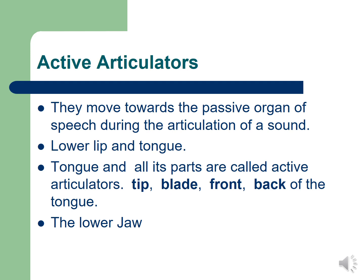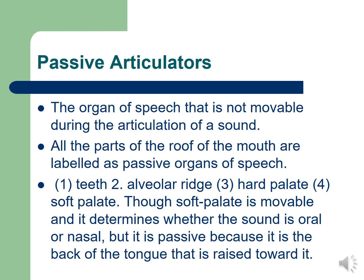The passive articulators are the organs of speech that are not movable during the articulation of a sound. They are called passive organs of speech because they cannot move easily the way the tongue and the lip move. The parts of the roof of the mouth include the alveolar ridge, the hard palate, the soft palate, and also the teeth.